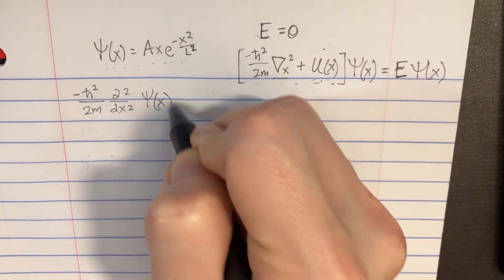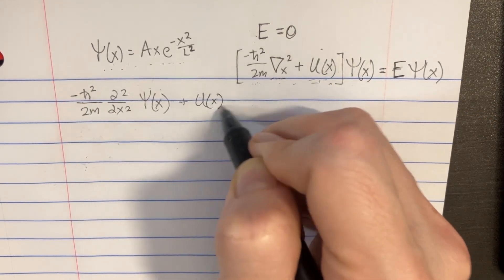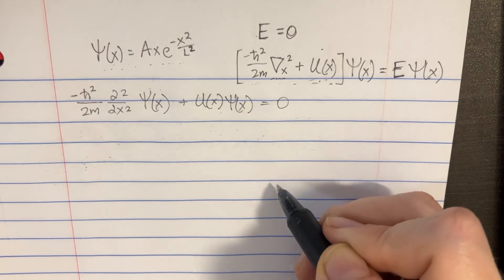And then we can multiply these two, which will give us a plus u(x) times the psi(x). That's supposed to be equal to zero.